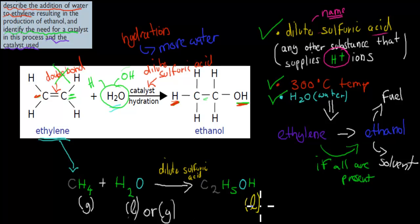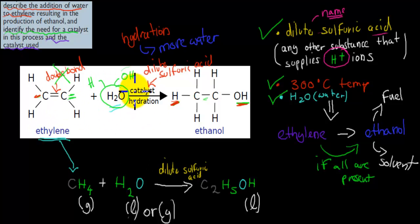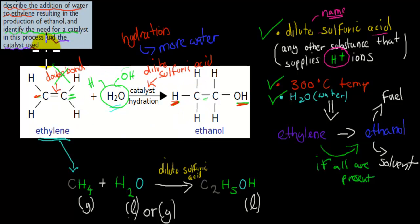To summarize: describe the addition of water to ethylene — ethylene plus water means that the water molecule comes into the structure of ethylene and makes ethanol. Identify the need for a catalyst — this reaction won't happen without one, so we need dilute sulfuric acid and temperatures of about 300 degrees Celsius. The name of the catalyst is dilute sulfuric acid — dilute meaning small amounts.